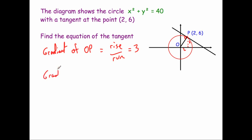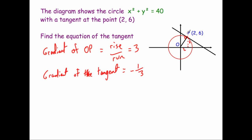Now, because the tangent is perpendicular to the radius, its gradient is the negative reciprocal of 3. The reciprocal of 3 is one third, so the gradient of the tangent is minus one third. So this line has a gradient of minus one third.